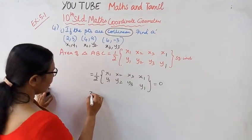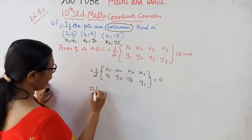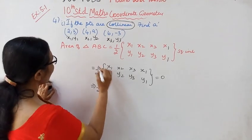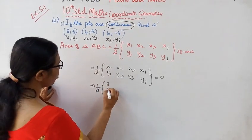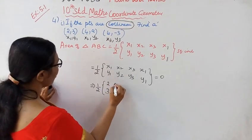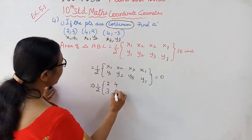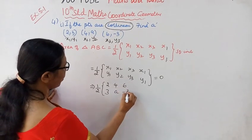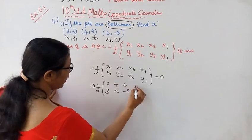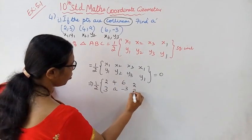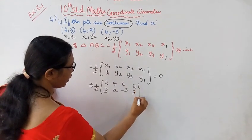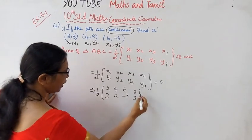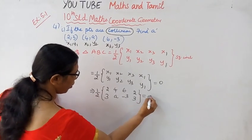That implies half into: substituting x1=2, y1=3, x2=4, y2=A, x3=6, y3=-3. Again closing with 2, 3. If it is equal to 0.